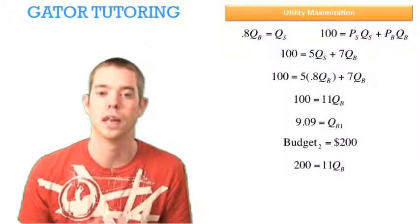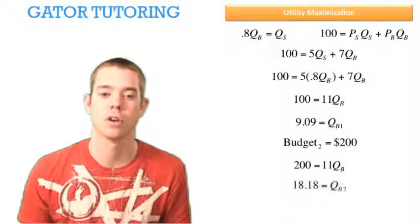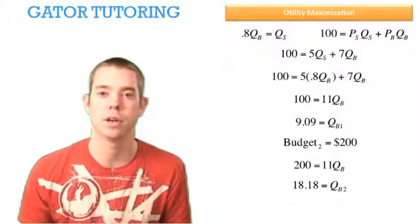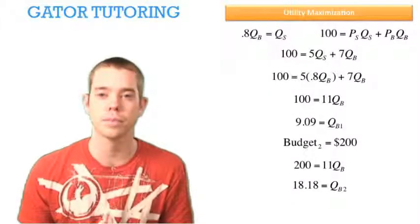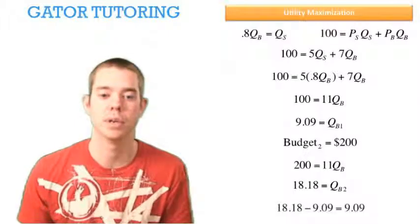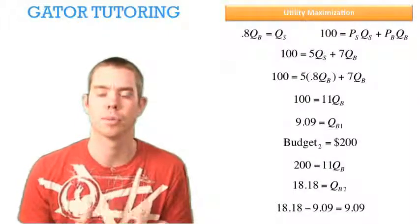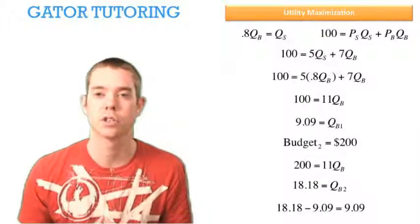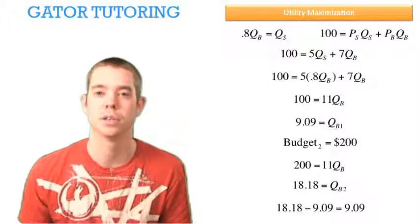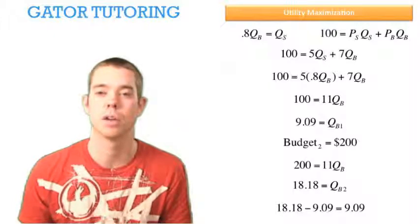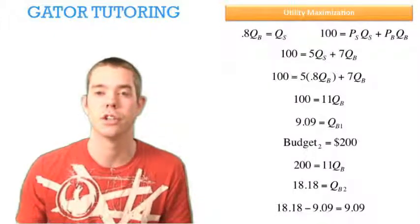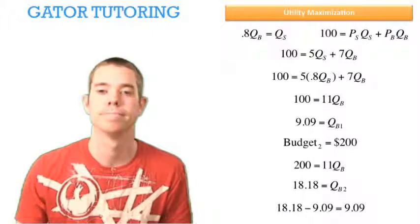So 200 is also equal to 11 QB, and we solve and find that with a $200 budget, we're going to buy 18.18 beers. So to find the change in beers, we don't want to remember a particular order here. We just want to think about it. Our income has gone up, it's increased, so we have more money to spend, which means the change in beers is going to be a positive number. So 9.09 is the change in beers, and it is positive.